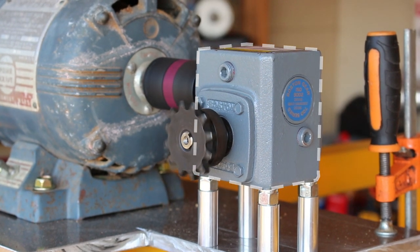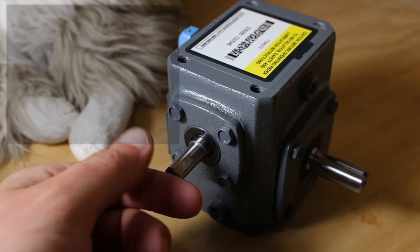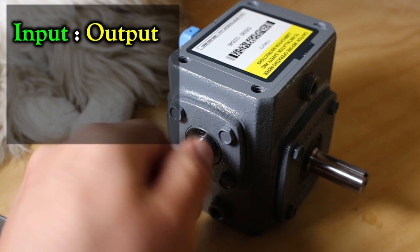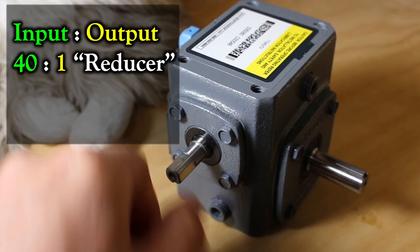Today we're going to measure a little Boston Gear reducer. This is a gearbox that has an input to output ratio of 40 to 1, so we call it a reducer.